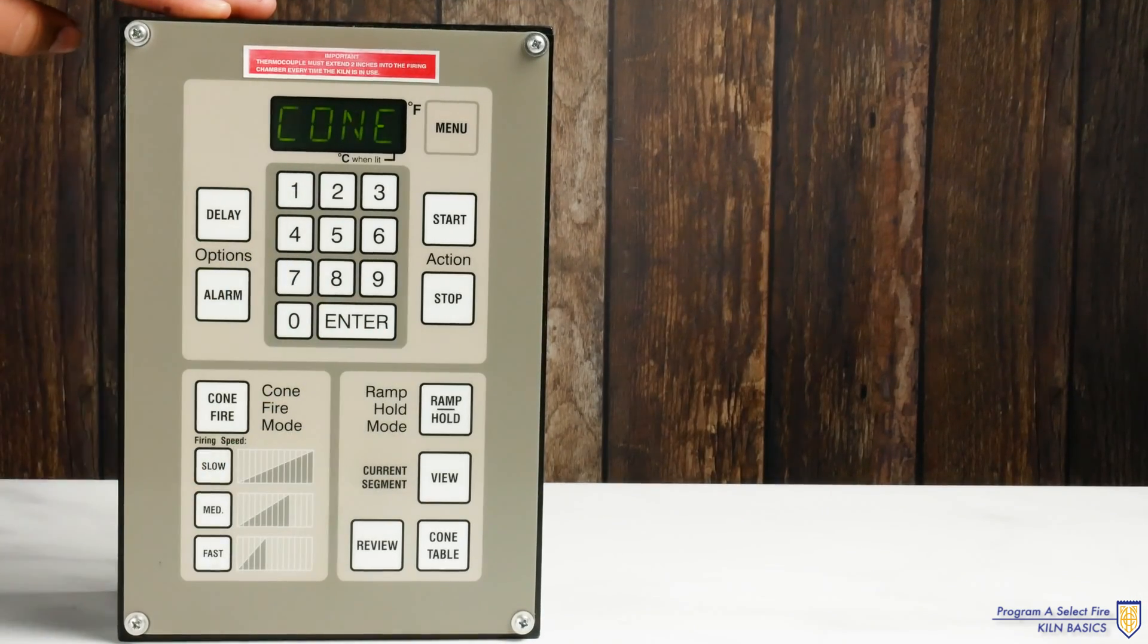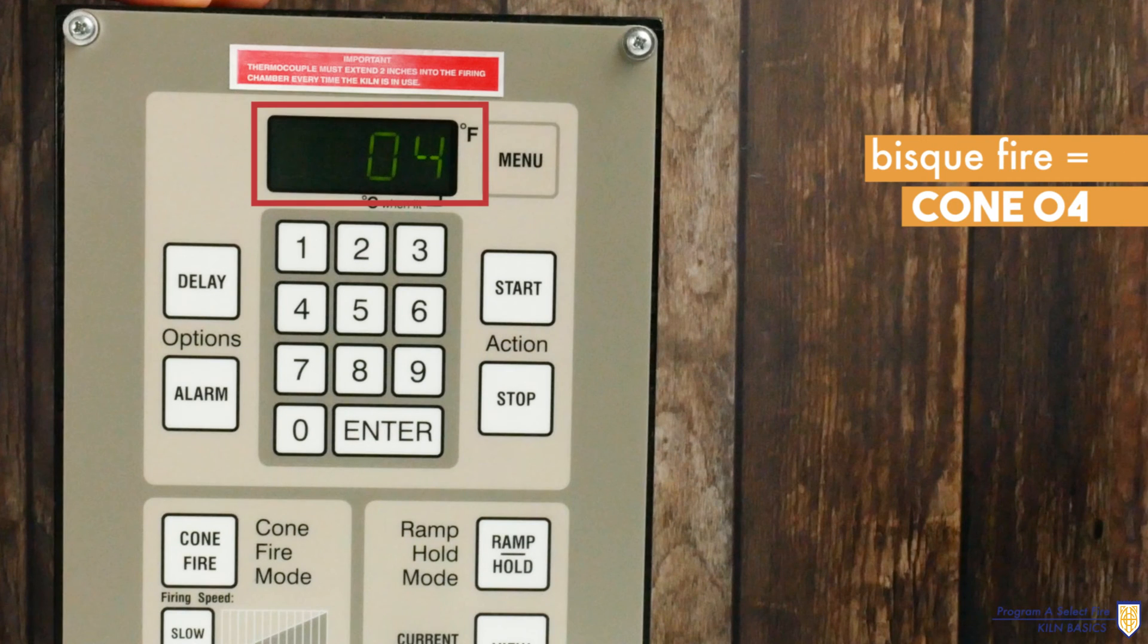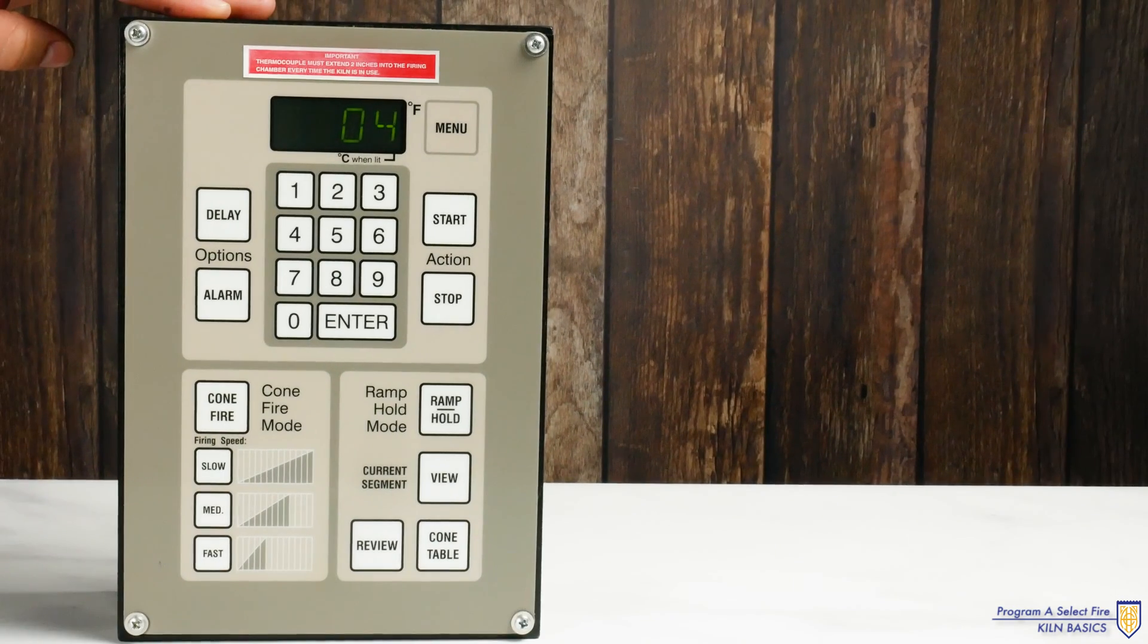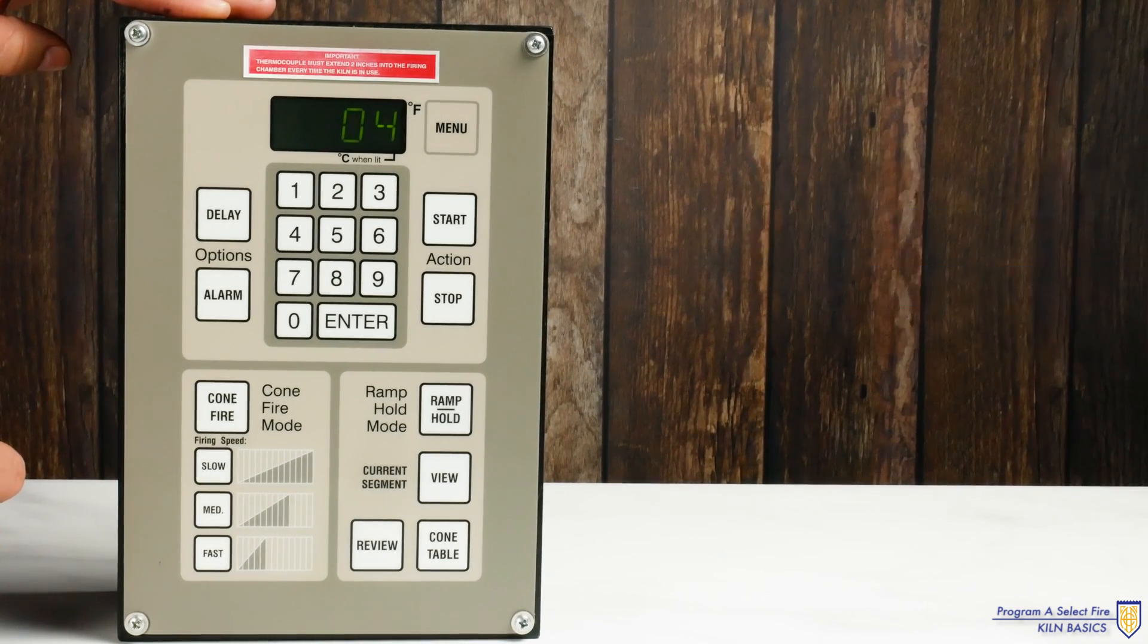It will then prompt you to put in a cone value. For bisque we will go to cone 04 although there is a range of cone values still considered bisque. Be mindful cone values that begin with a zero and those that do not. Hit enter.